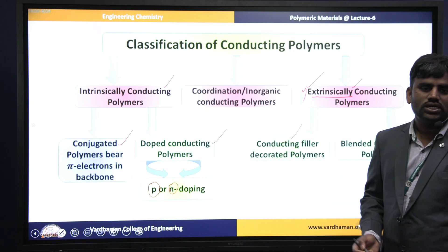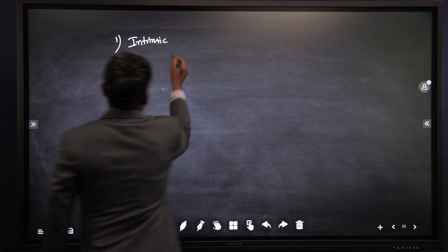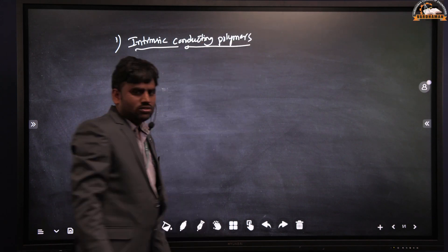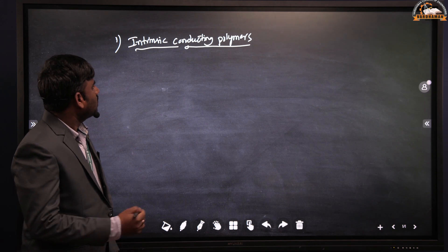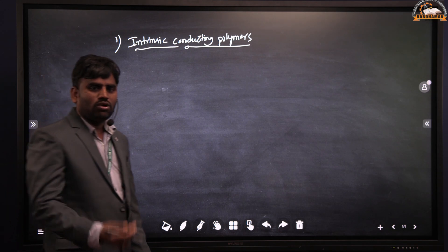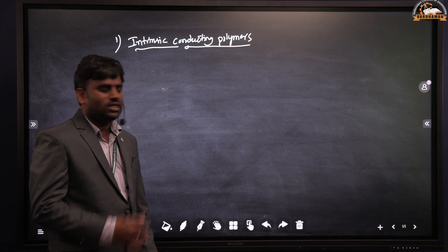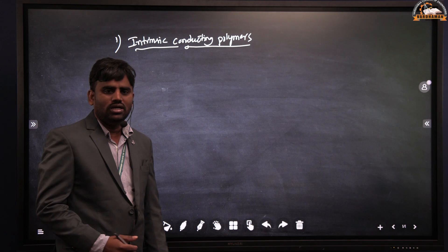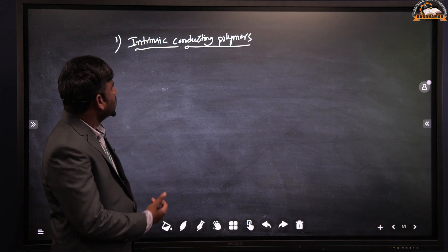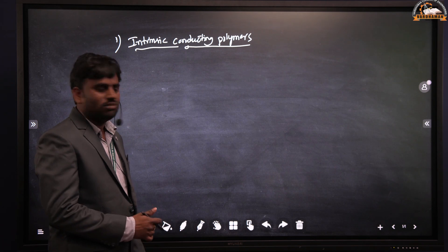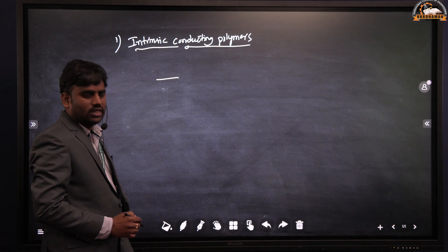Starting with intrinsic conducting polymers: these polymers exhibit the conducting property without adding any external substance. That means within the molecule only, these polymers contain pi electrons. These pi electrons move from one end of the polymer chain to the other end — this is called intrinsic conducting polymers.